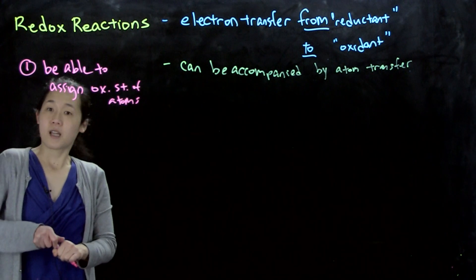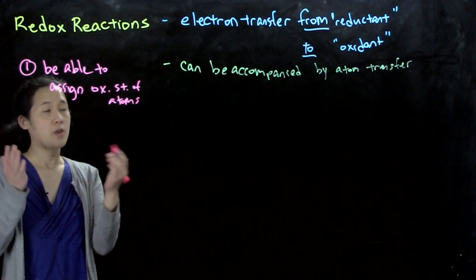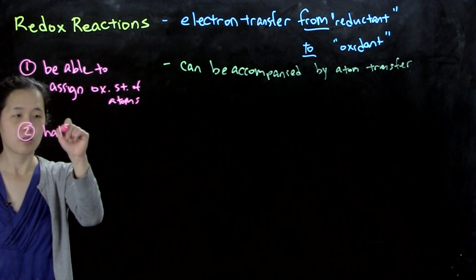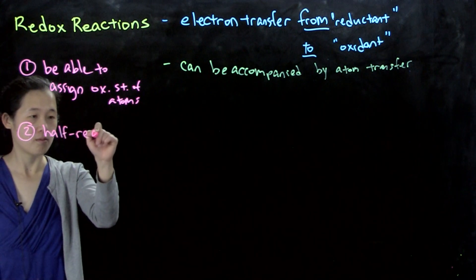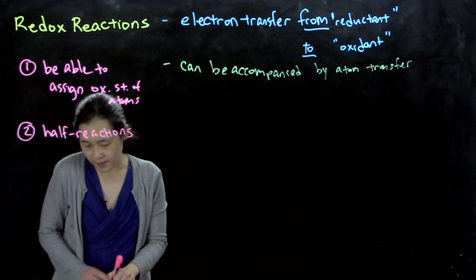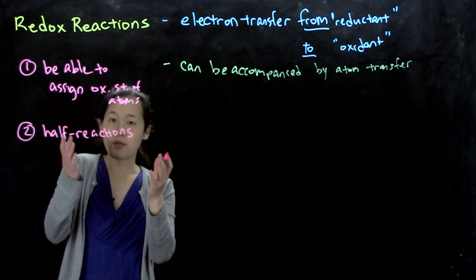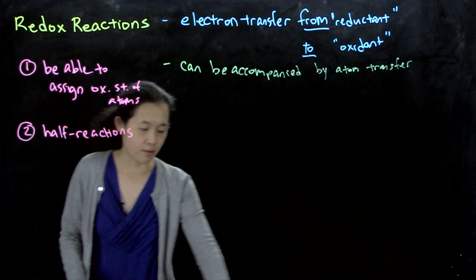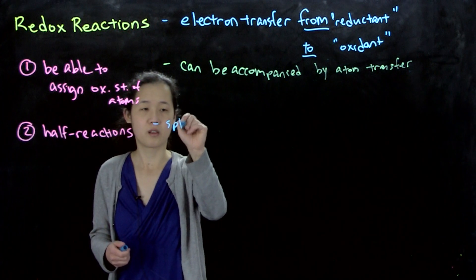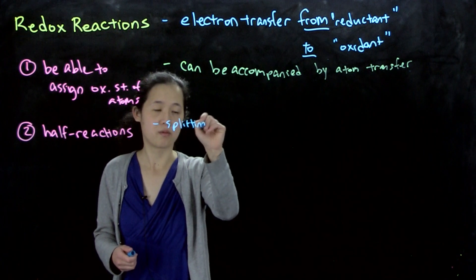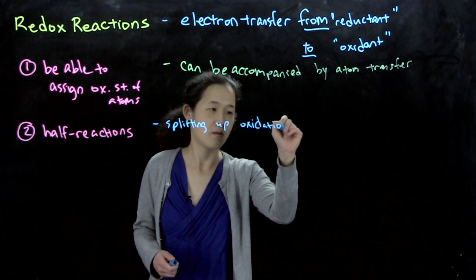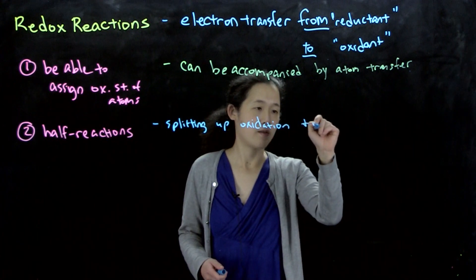And then, given a chemical reaction, we should identify half reactions. This is just splitting up our oxidation and reduction into half reactions, oxidation and reduction.